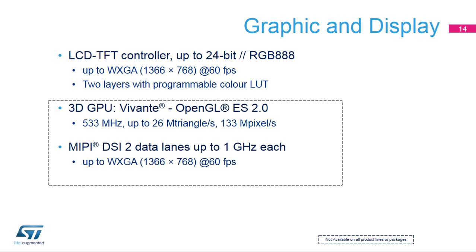The LCD controller can provide up to WXGA at 60 frames per second or 63 megapixels per second. Higher resolutions are available with reduced frame rate, assuming the pixel clock remains in the allowed range. A 3D GPU is available on the STM32 MP157 line and can process up to 26 megatriangles per second or 133 megapixels per second. A MIPI Display Serial Interface (DSI) is available on the STM32 MP157 line and can provide up to WXGA at 60 fps or 63 megapixels per second, with higher resolutions possible at reduced frame rate.